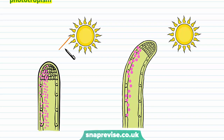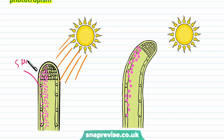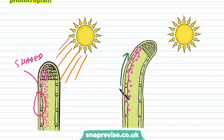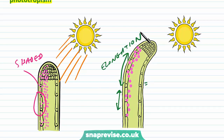If you imagine the cells on the shaded side are going to be longer, the shoot bends towards the light — positive phototropism. Comparing the two sides: light has arrived on one side, the auxin builds up on the shaded side, causing those cells to elongate more. As the cells on one side get longer while the other stays the same, that side becomes top heavy and the shoot leans over, successfully bending towards the light.